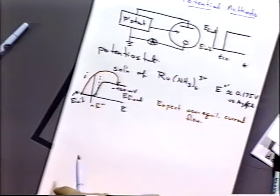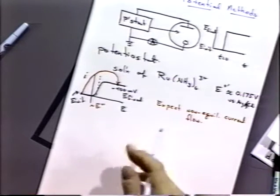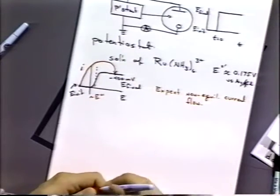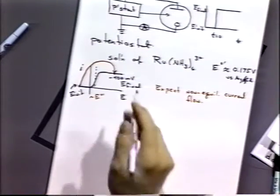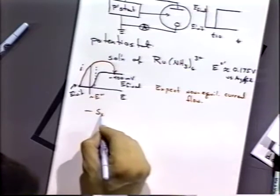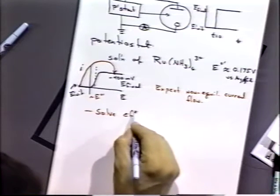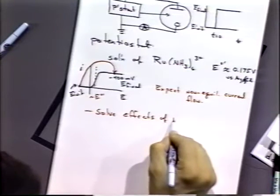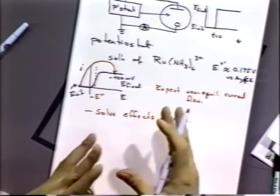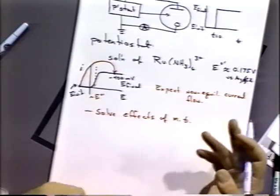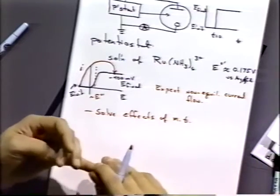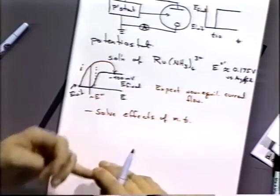Let's see if we can derive what that non-equilibrium current flow as a function of time is. To do that, we need to solve equations that include the effects of mass transport — whether diffusion, convection, or migration — and also the effects of electron transfer kinetics. We've already seen equations for those three mass transport conditions.